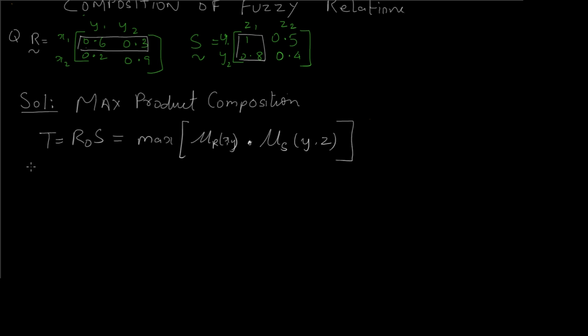So T(x1, z1) would be given as max of multiplication of 0.3 into 0.8, which gives us max of 0.6 comma 0.24. The maximum of these two values is 0.6, so we got the first value.